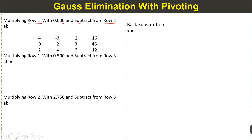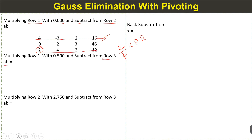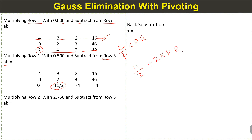We multiply row 1 by the appropriate term and subtract from the second equation. Next, to eliminate the required term, we compute 4 divided by 2, divided by 4, multiply the pivot row, and subtract from the third row. Then we eliminate the next term by computing 11/2 divided by 2 and multiplying the pivot row, giving a 0 in that position.